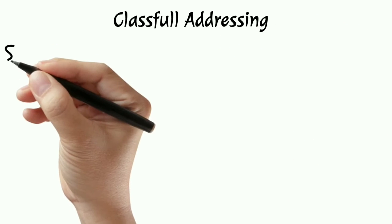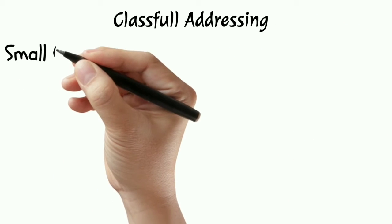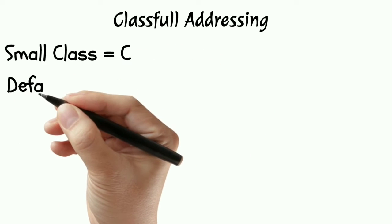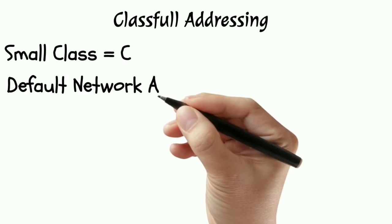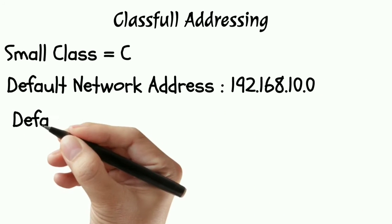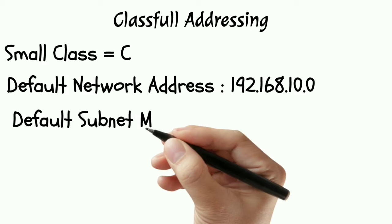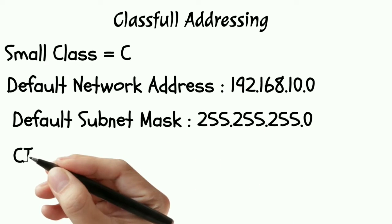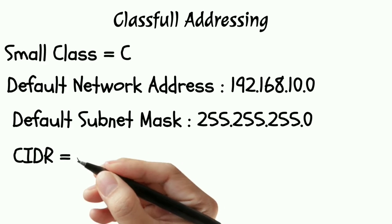Class C is the smallest class. Default network address for this class is 192.168.10.0. Default subnet mask is 255.255.255.0.